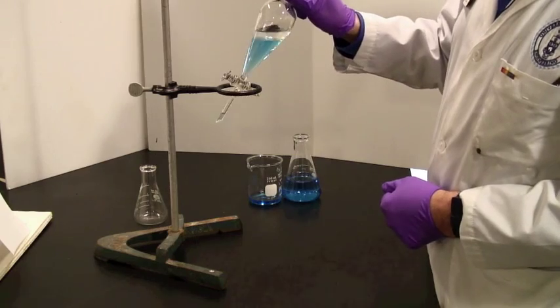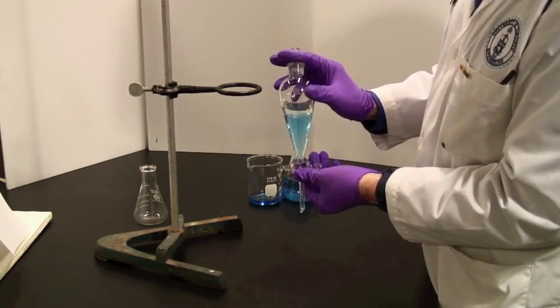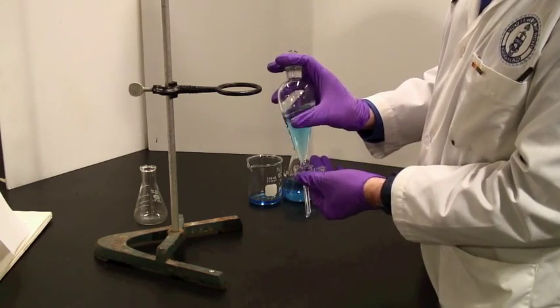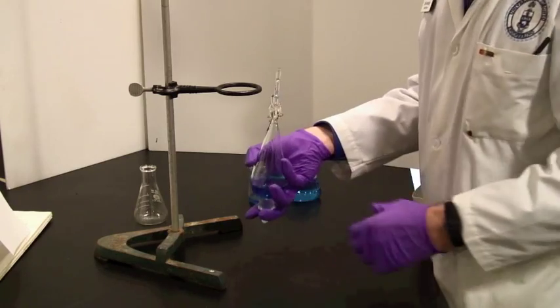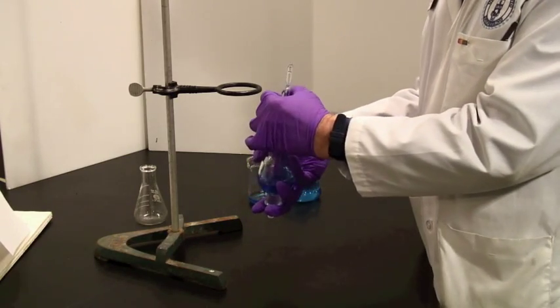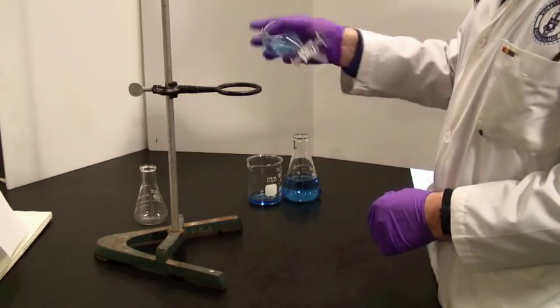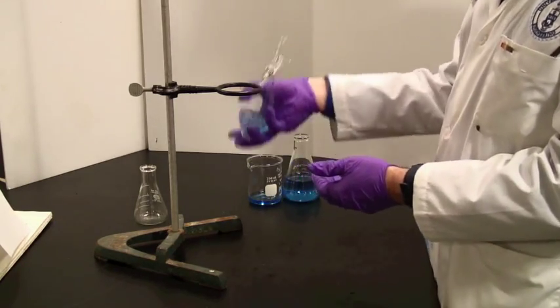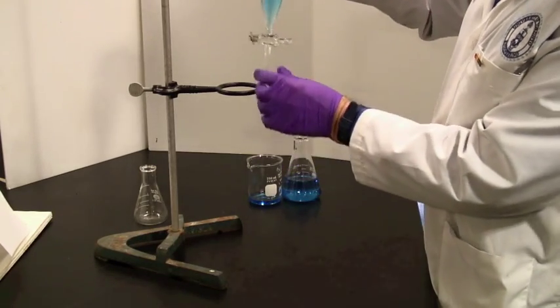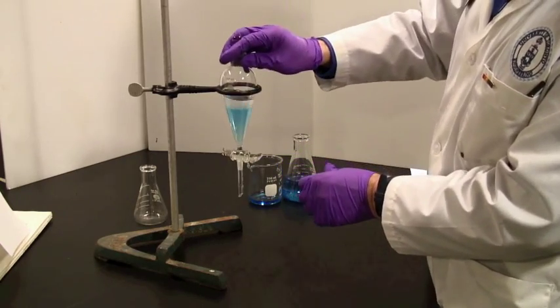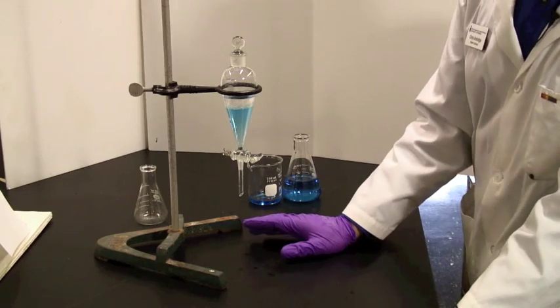Take it out of the clamp stand. Make sure that you are holding the cap on with your fingers. Invert and immediately open the tap because doing that will cause a pressure increase. Close the tap again and then invert a few times to make sure that everything mixes properly and place back in the ring stand to allow it to settle. This may well take a while.